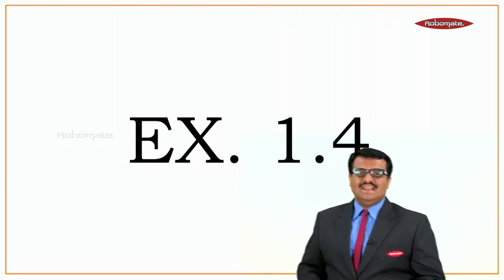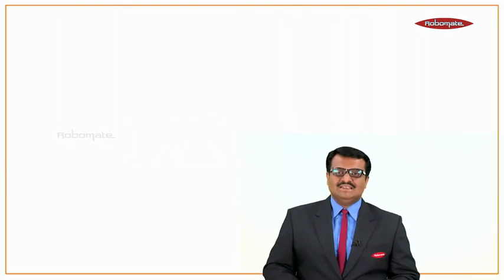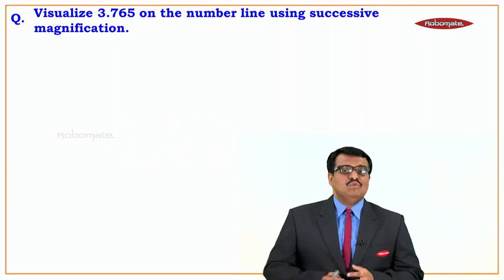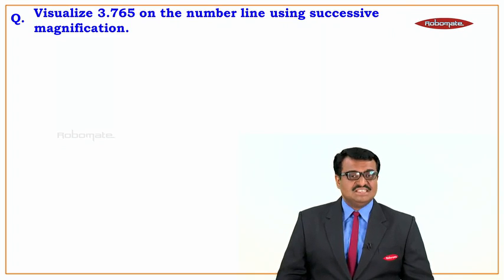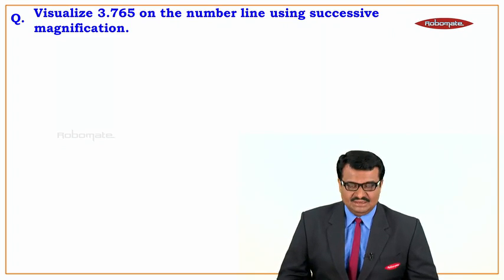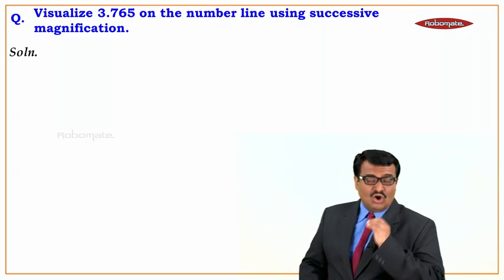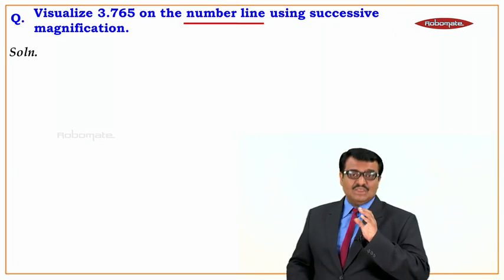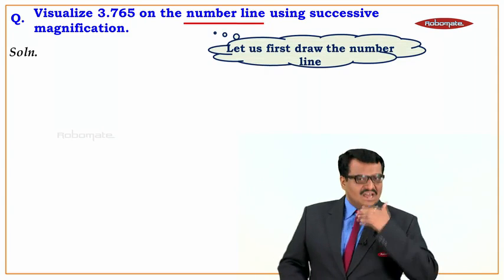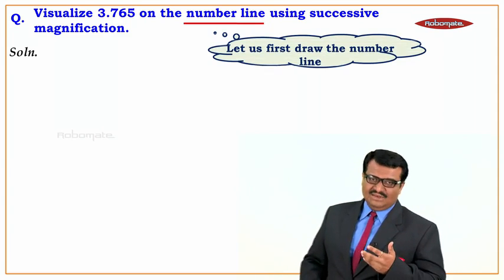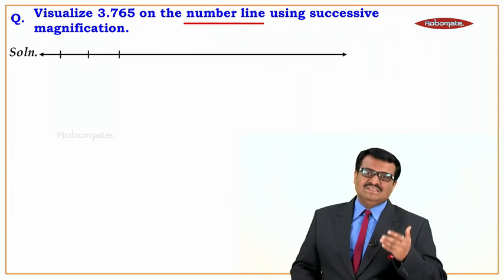The next question from exercise 1.4 is: visualize 3.765 on the number line using successive magnification. So we want to visualize 3.765 on the number line using successive magnification. Let us draw a number line and we'll make 10 divisions in it.